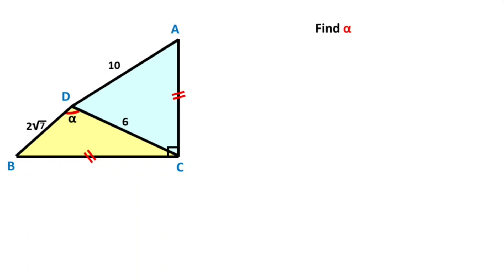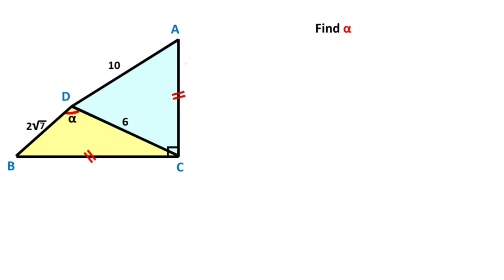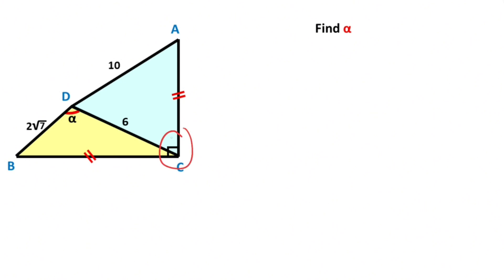Hello everyone. In this video we have one quadrilateral. This length is given 2 root 7, and here is given 10 units, this length is given 6, and these two side lengths are given as equal. Here is 90 degrees, and angle alpha is at.